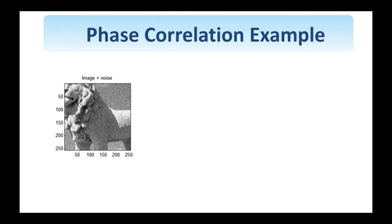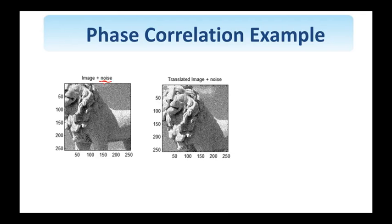Let us explain the phase correlation method with the use of an example. Consider the image shown here. Noise has been added to this image and also a translated version of this image as shown here. It should be clear that if I translate the first image in approximately the diagonal direction I should obtain the second one. Let us denote by x(n1, n2) the first image and the second one by x(n1 minus m1, n2 minus m2), the two translations in the horizontal and vertical direction.